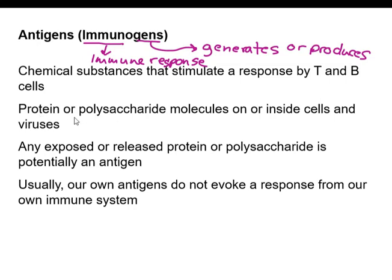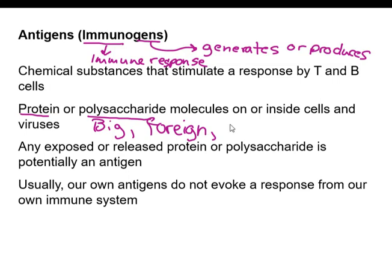Antigens are typically proteins or polysaccharides on or inside cells or viruses. They must be large — proteins are dense, polysaccharides are long. They must be foreign to the body, because our immune system has learned to tolerate self-molecules. They also must be complex — something with just simple repeating subunits, even if foreign and large, often doesn't produce a strong immune response.